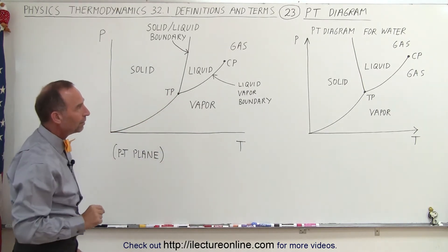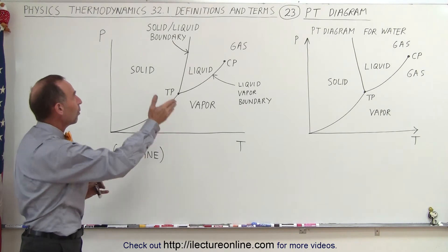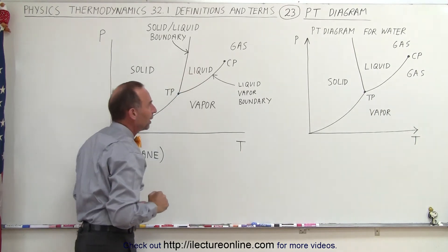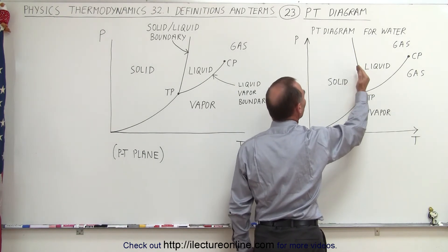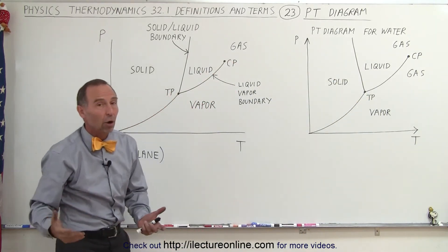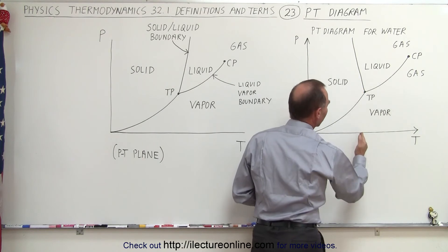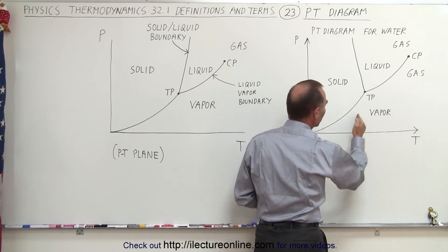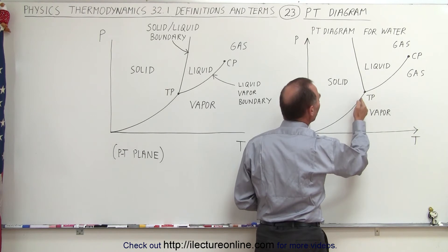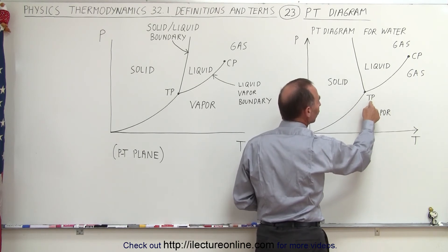We drew another diagram to the right, because that's the PT diagram for water. Water has very interesting behavior different from all other substances. Notice that the solid-to-liquid boundary for most substances has a positive slope, while for water this line has a negative slope. The liquid-to-solid boundary has a different slope for water compared to basically all other substances in the universe. For example, along an isotherm at reasonable temperature and very low pressure, water will be in the vapor state, and as pressure increases, it goes directly from vapor into a solid.